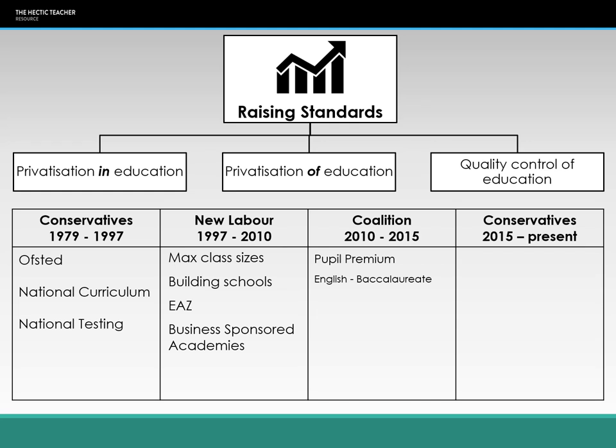The EBacc also introduced changing the grading from A to G to one to nine, which confused many people. A grade nine was determined by the top 10% of the country of all students taking that subject at GCSE in that exam board. Schools couldn't target students for nines because we don't know what the rest of the country is doing. The EBacc was about raising standards and quality control — trying to make sure students didn't narrow too much at GCSE level.